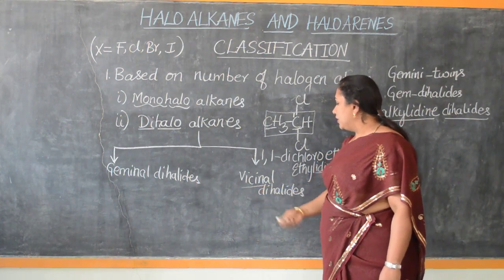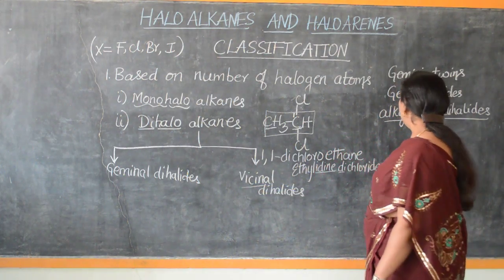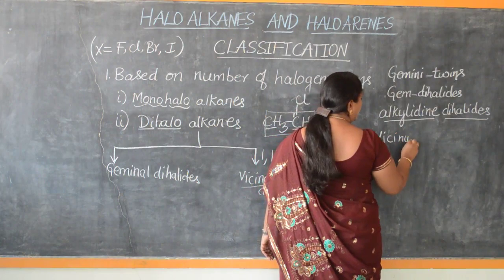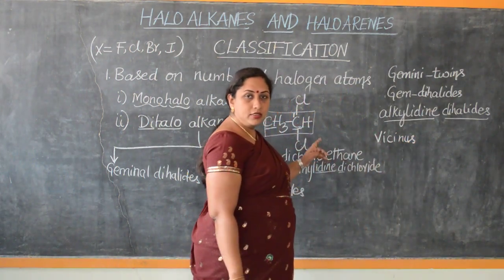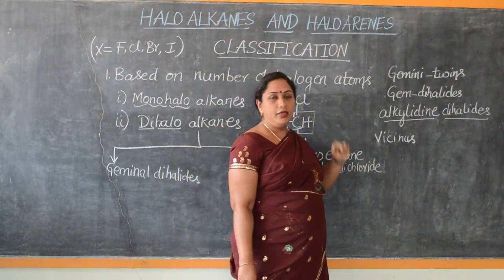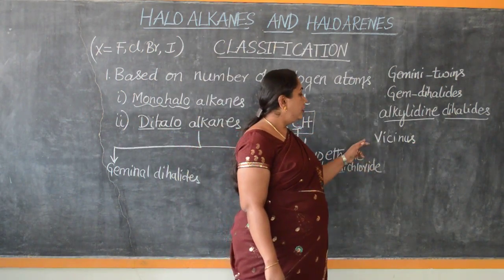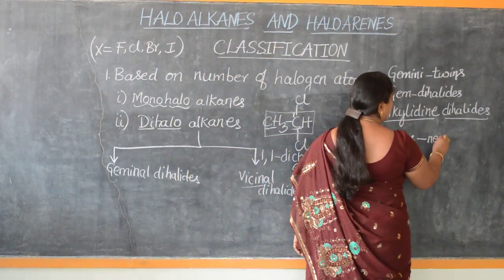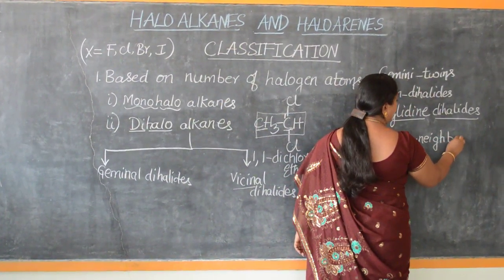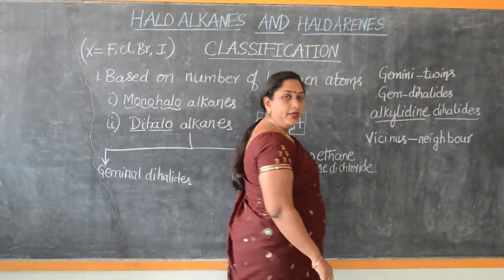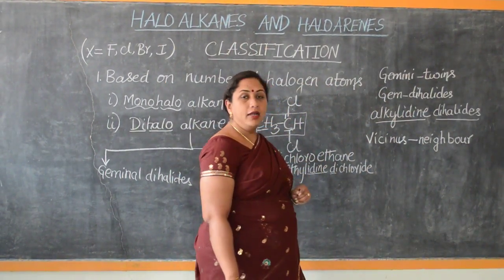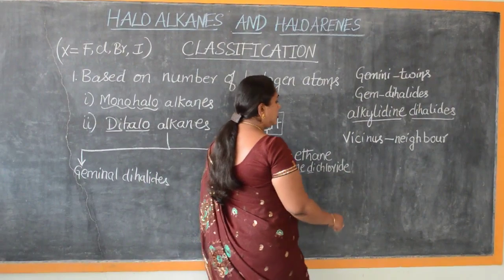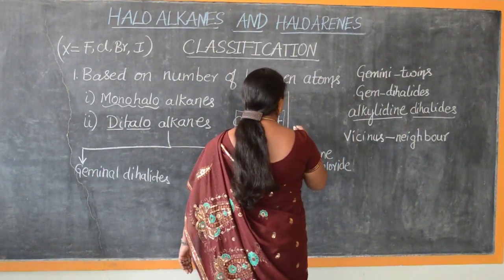Now let us look at vicinal dihalides. Vicinal dihalides is derived from the Latin word 'vicinus', which, like the term Gemini, has a Latin origin. 'Vicinus' means neighbor. This means that the halogen atoms are attached to adjacent carbon atoms. Let us take up an example so the concept becomes clear.